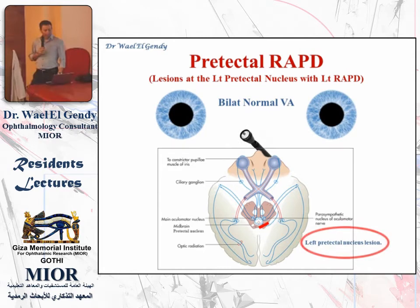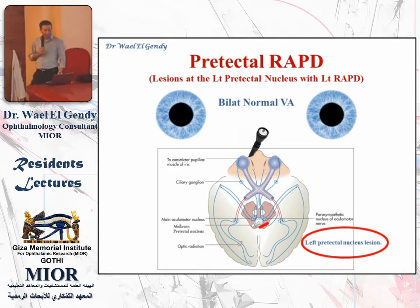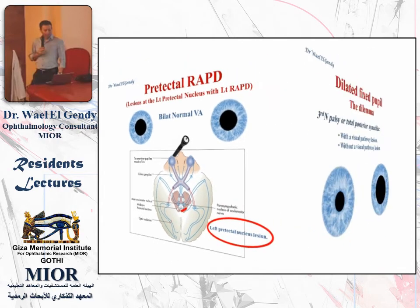The next example is what we call a pre-tectal relative afferent pupillary defect. We have a lesion in the pre-tectal nucleus in the posterior midbrain, which will affect the pupillary reflex but will not affect vision, because it is away from the visual pathway. In this example, you will get a left relative afferent pupillary defect, but the vision will be normal. The flash on the right side gives a normal constriction of both eyes, while the flash on the left side gives dilatation of both eyes.